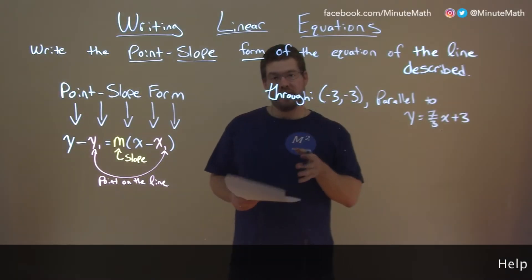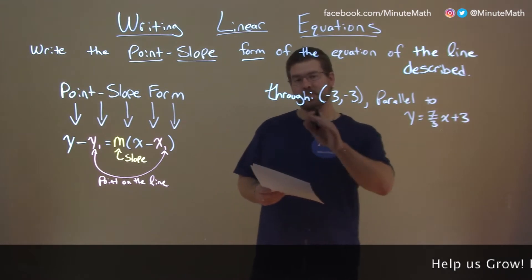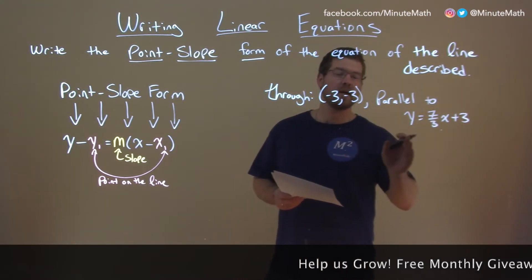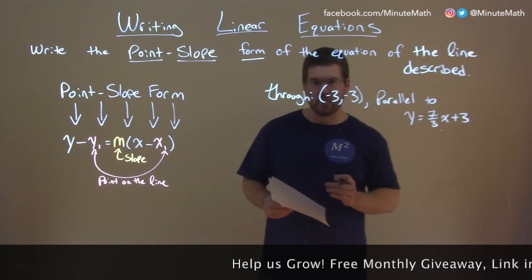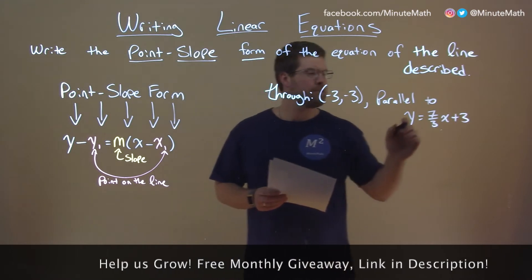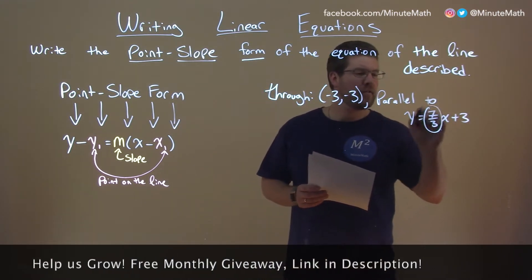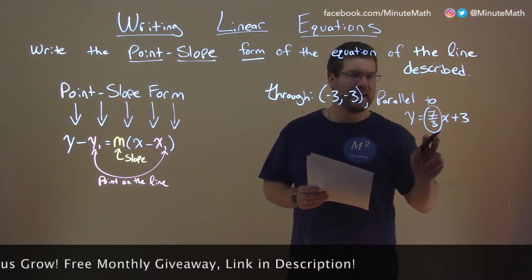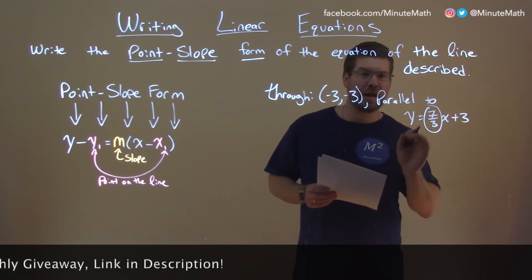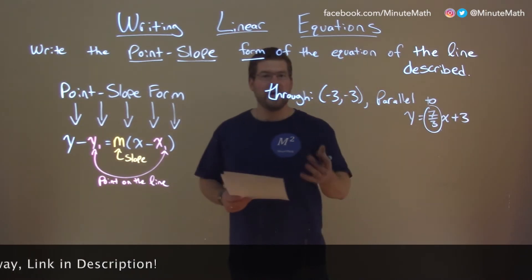So if I was given this problem: through negative 3, negative 3, and it's parallel to y equals 7 thirds x plus 3. The key to finding point-slope form is to find the slope of that line, right? 7 thirds. That's our slope, so our new line will have the same slope.